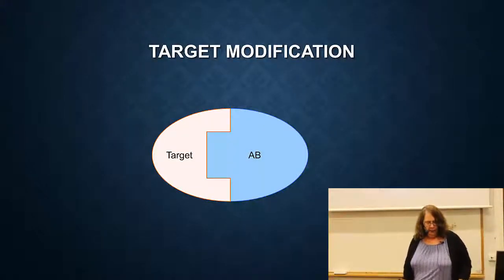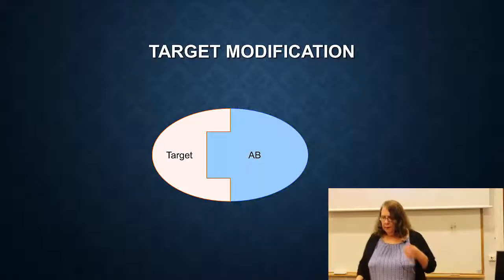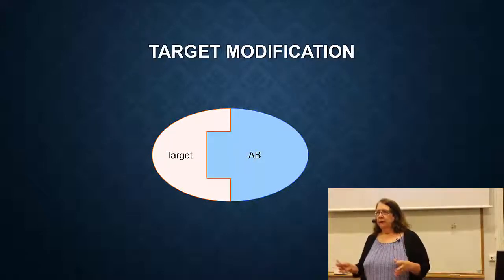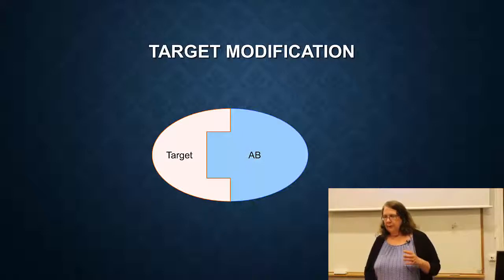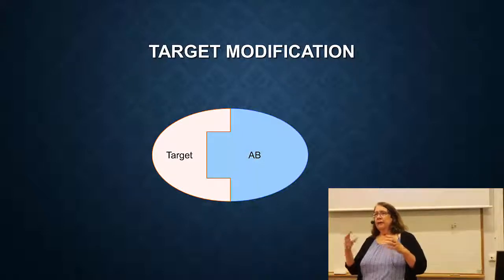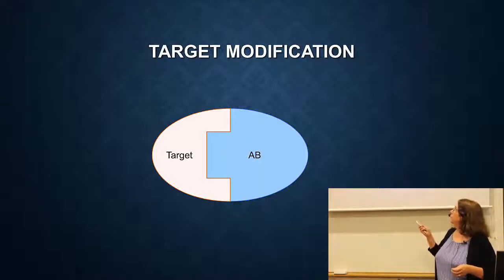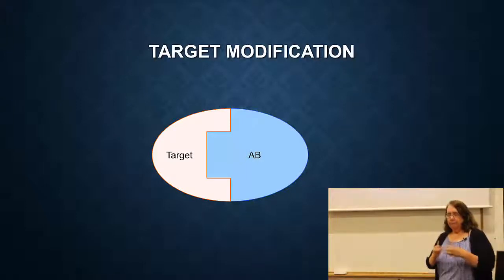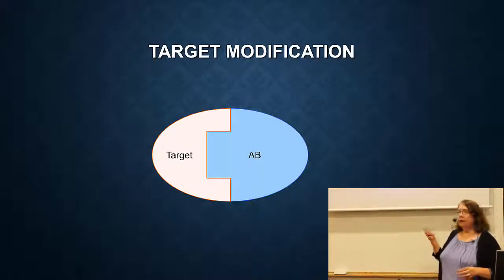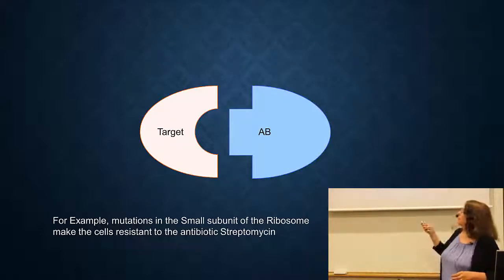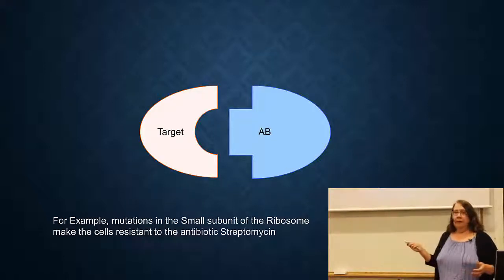The first way antibiotic resistance can work is by producing an enzyme that destroys the antibiotic. The second way is called target modification. Most antibiotics interact with the cell by interacting with proteins that fit together like a lock and key. In this example, the antibiotic in blue binds to its target in a very specific way. One way the cell can become resistant is by changing the target — changing the shape so it no longer binds the antibiotic properly.